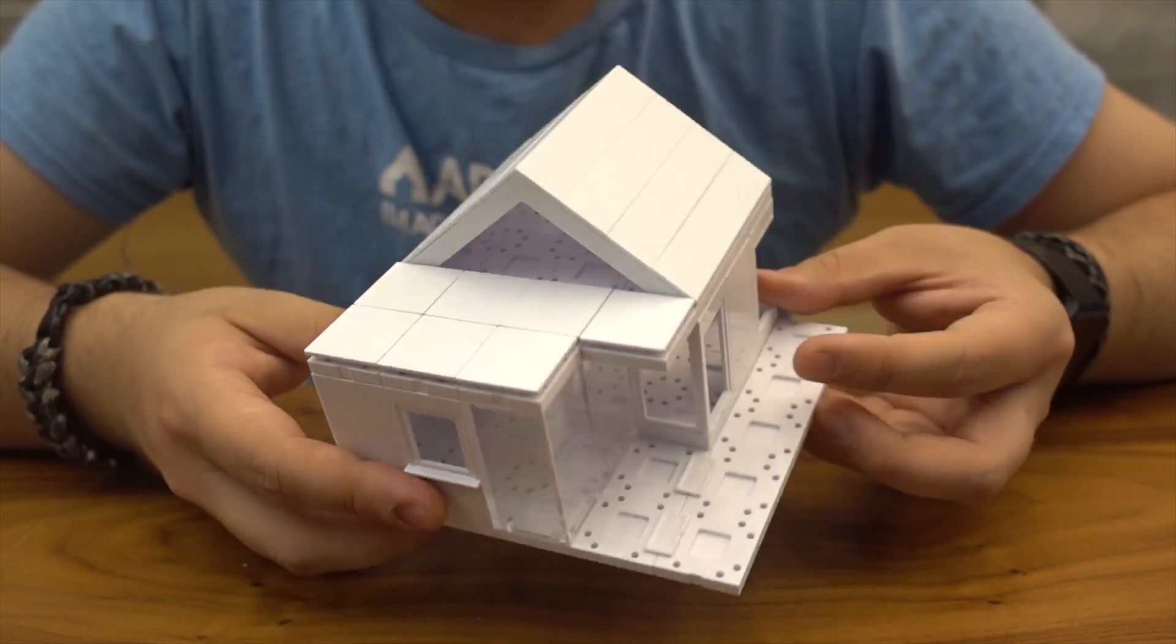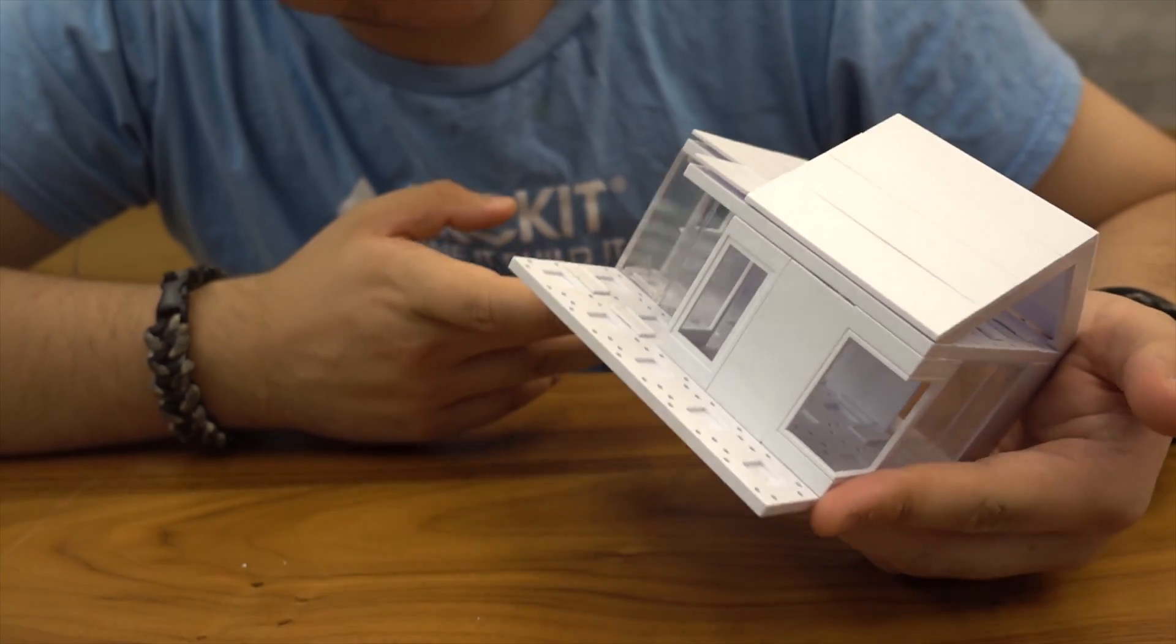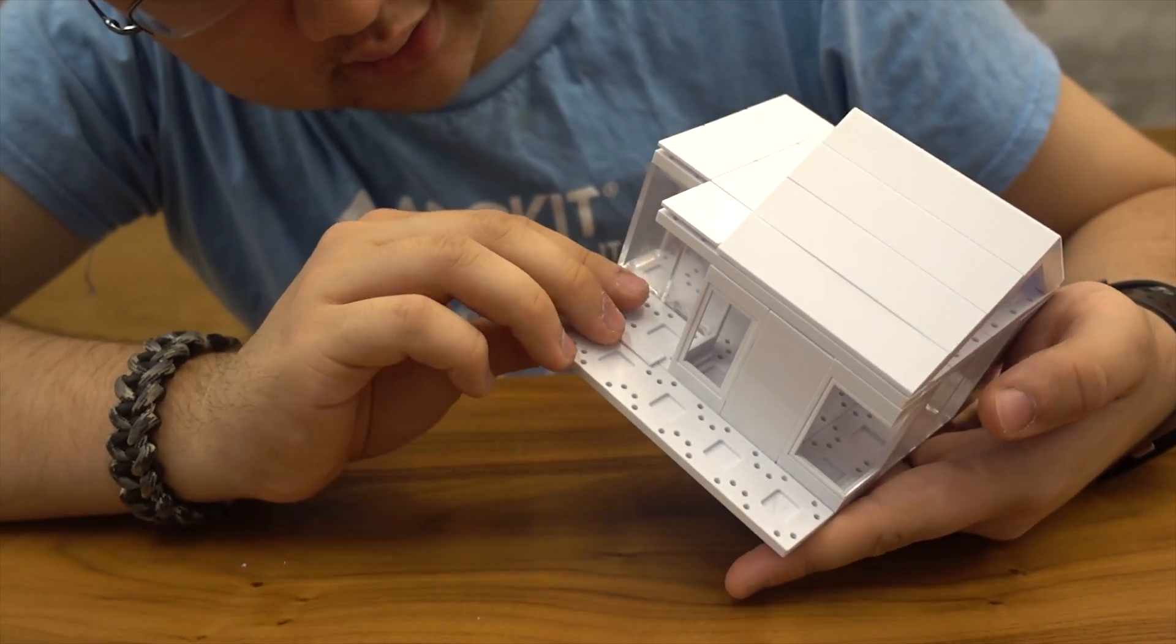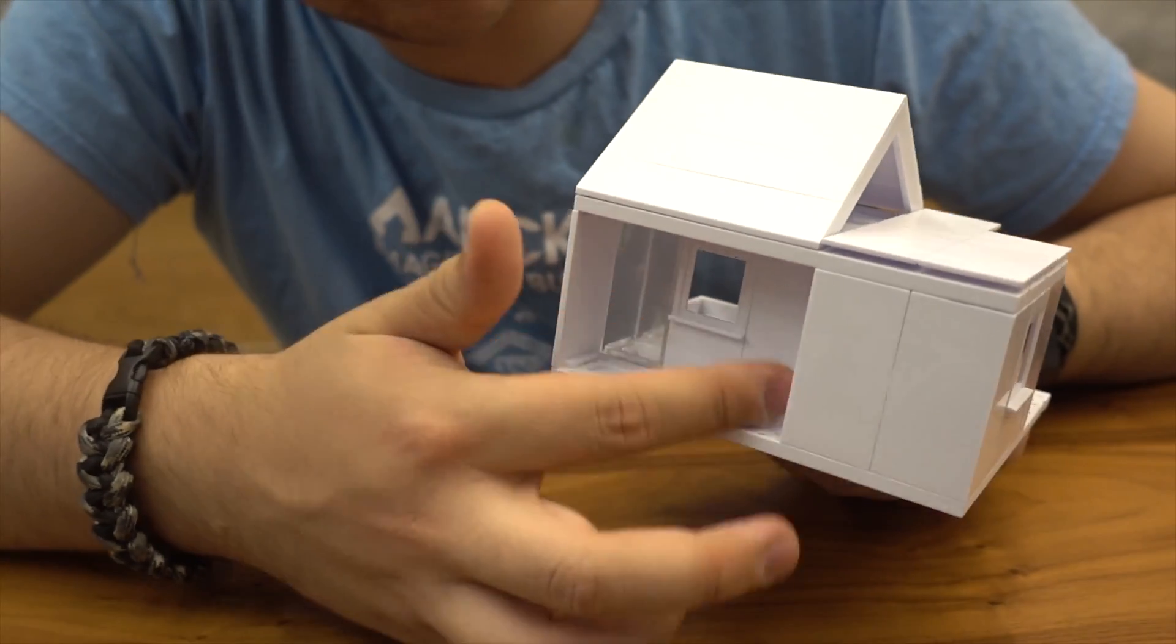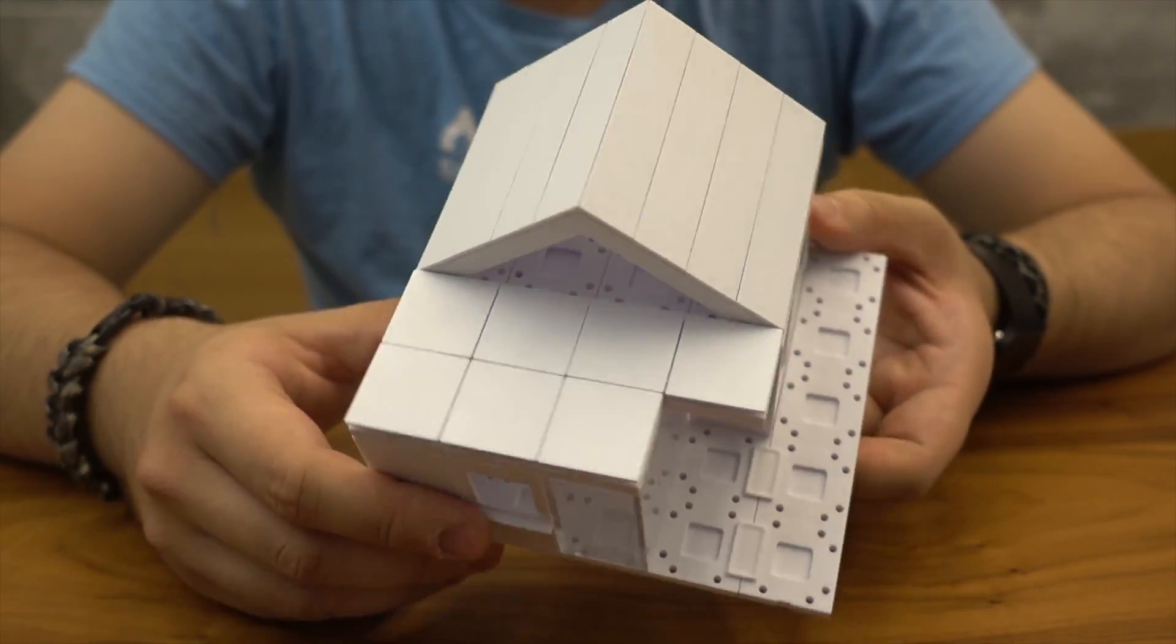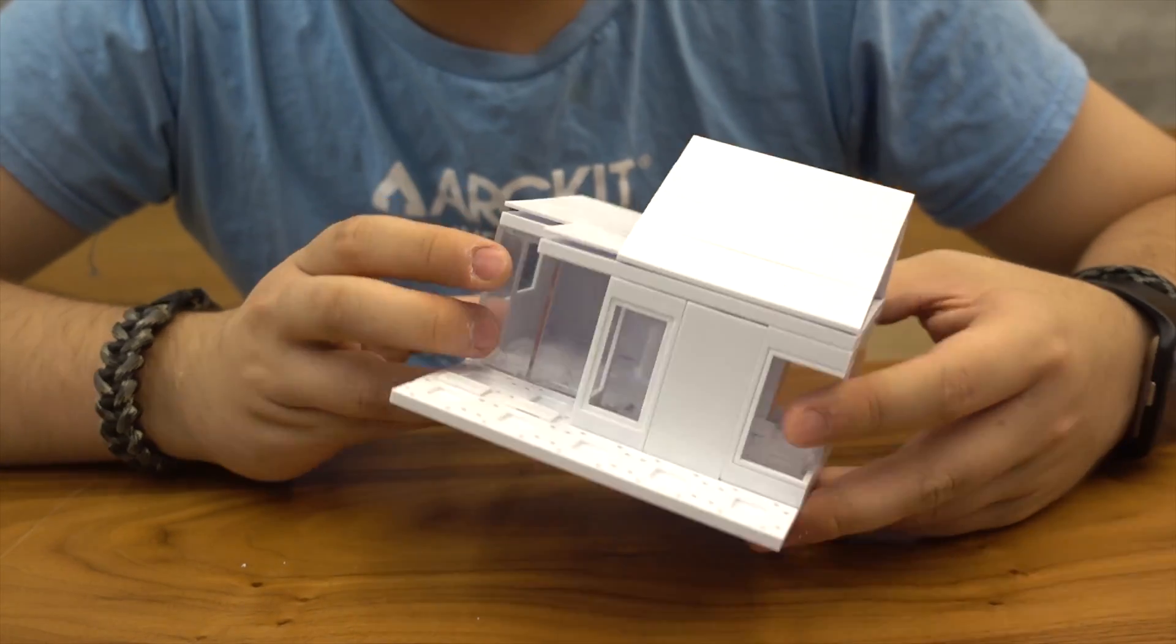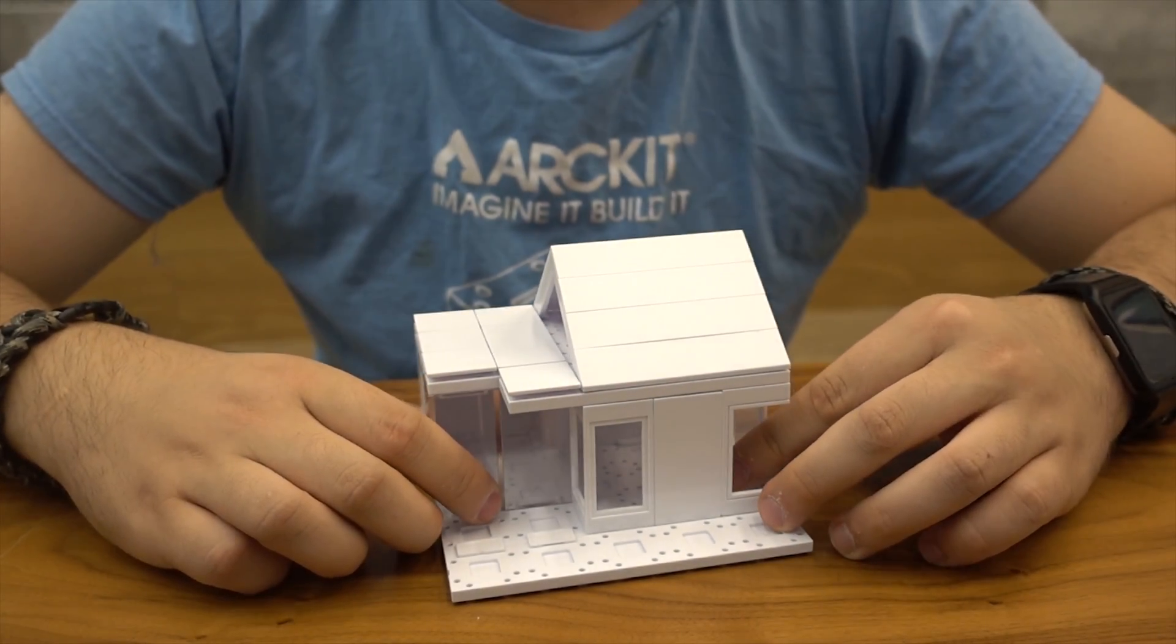All right guys, I think we're just about done here. The model looks pretty awesome, I do say so myself. We got a small porch here, our front entrance, two separate spaces inside, and also a backyard patio here. That's just about it. Feel free to add or expand upon this model. We have a few pieces left over. I'll see you next time. Thank you so much for watching.